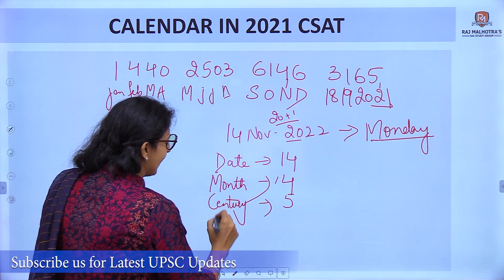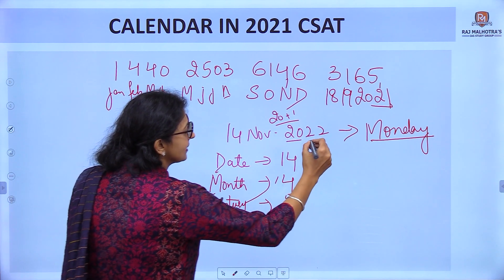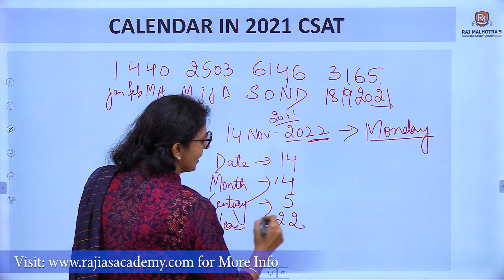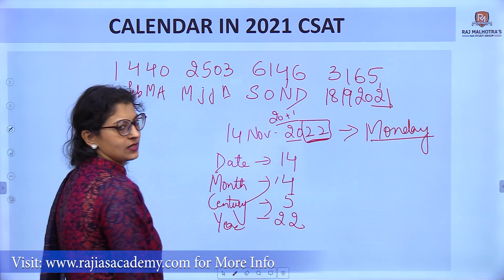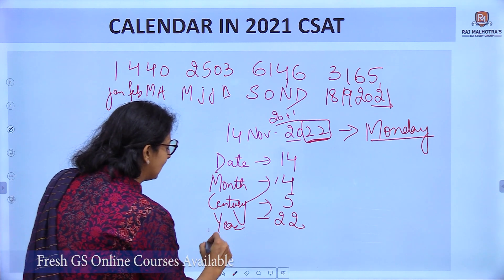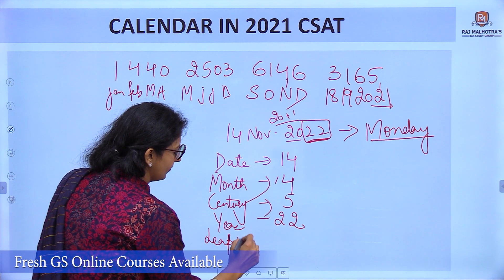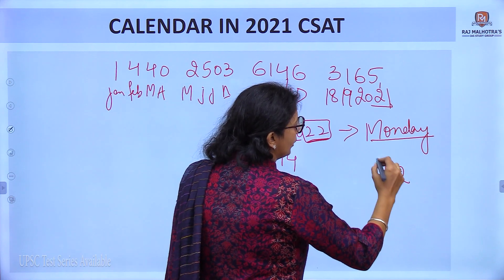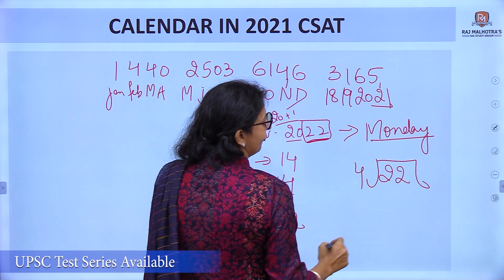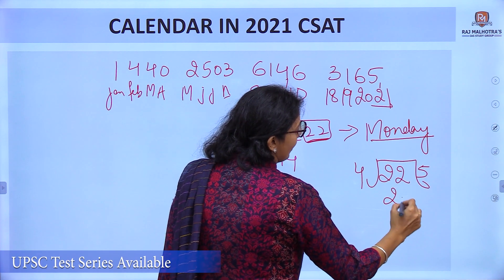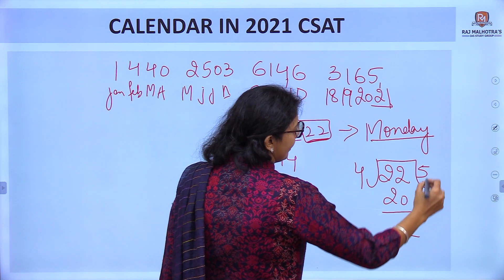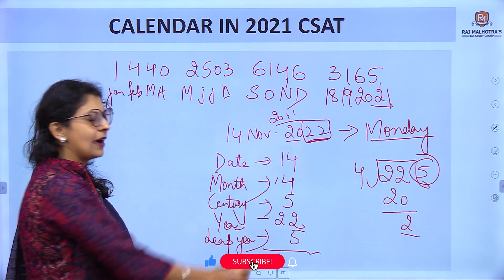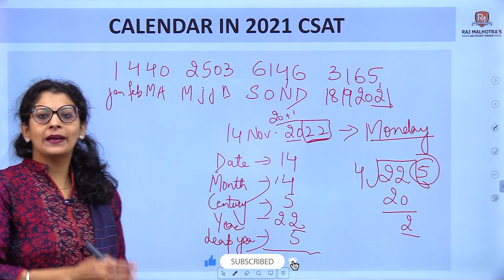Next is year — we take the last two digits: 22. Last step is the leap year count: we divide 22 by 4. 4 fives are 20, so the quotient is 5. We take the quotient, not the remainder. Now we add all five values and divide by 7.